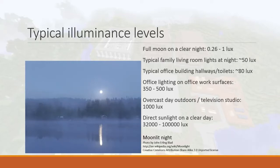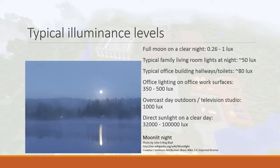Typical office lighting on work surfaces is between 350 to 500 lux. A work surface is basically a table. If you're in an office building or a library, your books and pages should be illuminated to about 300 to 500 lux. That is the standard recommended amount of light for reading and writing — reliable enough that you can read clearly.